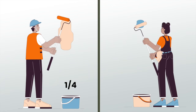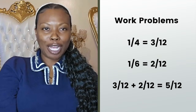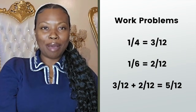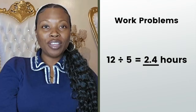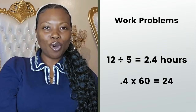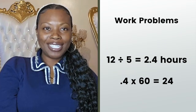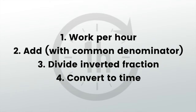Figure out how much of the job each painter does in one hour. The first painter does one-fourth, the second painter does one-sixth. Next, add those together, but we can't add fourths and sixths directly, so we need a common denominator, which is 12. One-fourth is the same as three-twelfths, and one-sixth is the same as two-twelfths. Add them together and in one hour they finish five-twelfths of the job. Now ask: how many hours would it take to finish the whole job at this pace? Flip that fraction upside down and divide 12 by 5, which comes to 2.4 hours. That 0.4 is part of an hour, not 0.4 minutes — multiply by 60 to get 24 minutes. So the total time is 2 hours and 24 minutes.